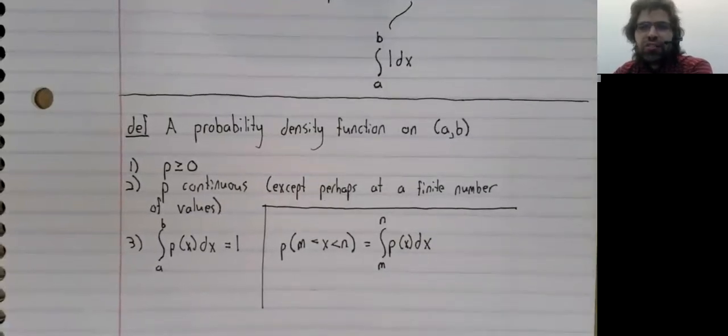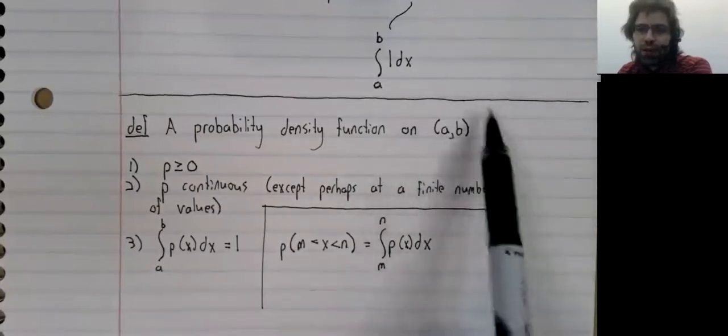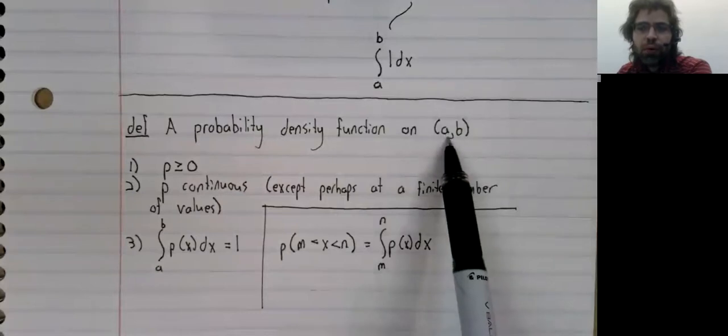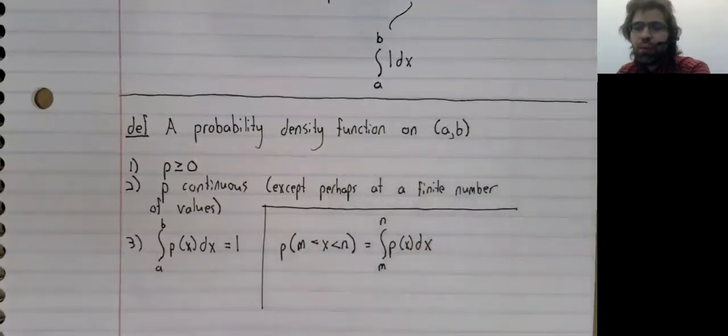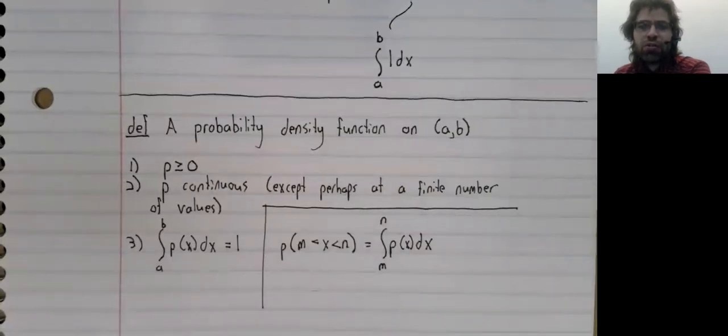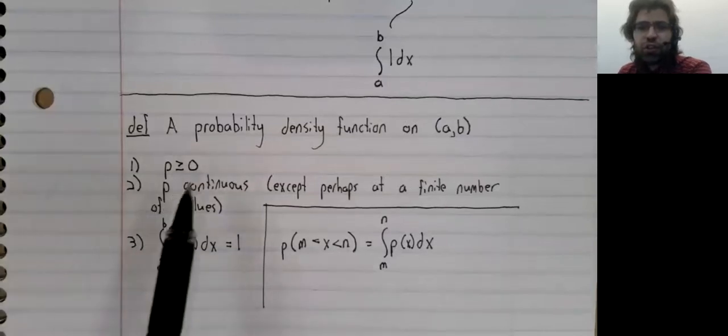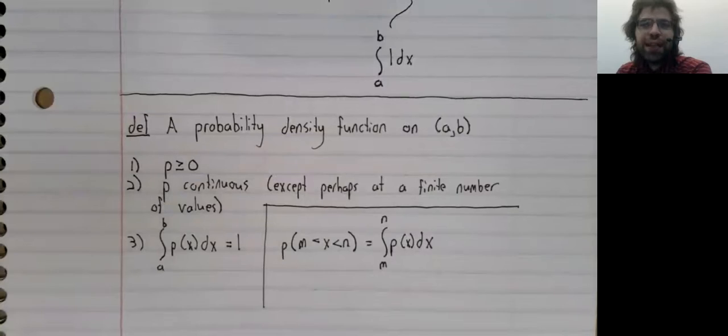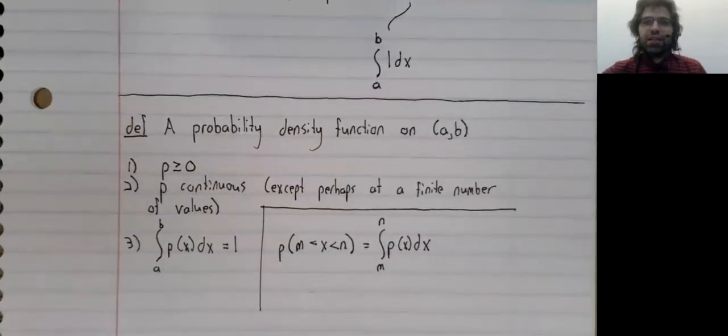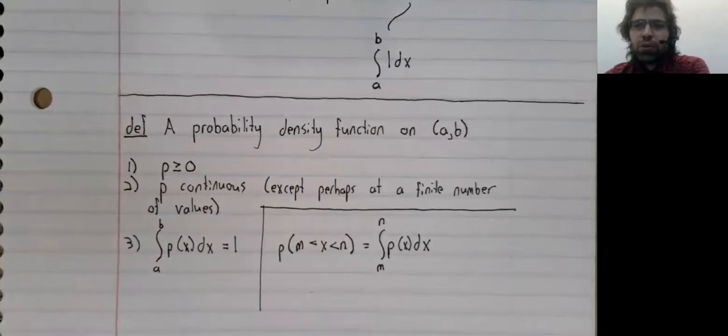And probability density functions aren't unique. You have really an infinite number of possible probability density functions on an interval. So if someone asks what the probability is that an event occurs, well, first you have to figure out what the probability density function is. And we'll state three common probability density functions.